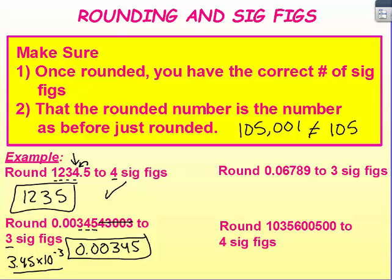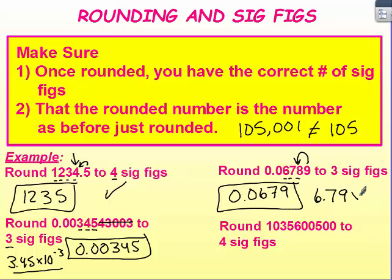I could also write it in scientific notation. That would also be acceptable. Two more examples. This one, we're rounding to 3 sig figs. So that's 1, 2, 3. The 9 is going to round that 8 up. Or again, you can write 6.79 times 10 to the negative 2.